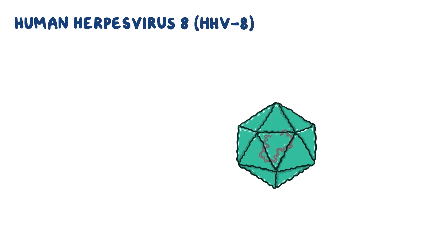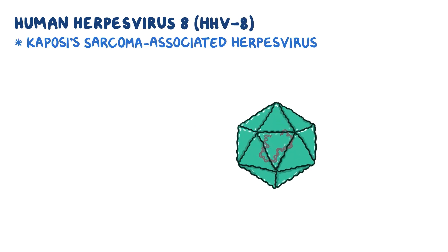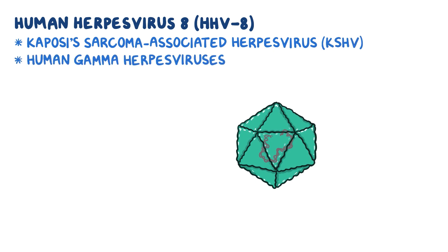Human herpesvirus 8, or HHV-8, also called Kaposi's sarcoma-associated herpesvirus, or KSHV, belongs to the family of human gamma herpesviruses.